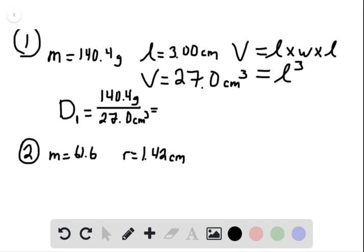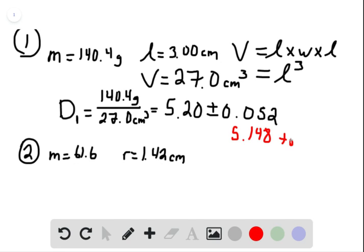And then we're going to factor in the uncertainty. So we're going to assume the densities are accurate to plus or minus 1%. So 1% of 5.20 is 0.052. So that means that the density could be as low as 5.148 or as high as 5.252 grams per centimeter cubed.